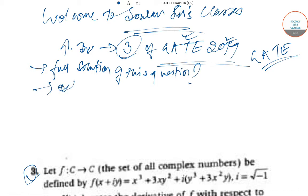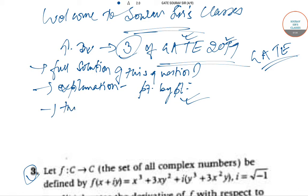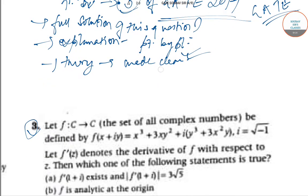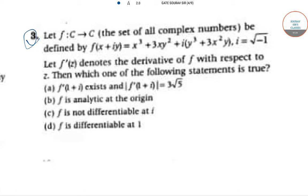We are going to give you a point-by-point explanation of this question, and if any theory part is required, theory will also be made clear to all of you. This is a complete package. You are watching Sarof Search Classes, and we are going to solve question number three. Let f be the set of all complex numbers defined by f of x plus iota y.